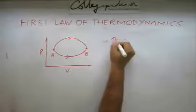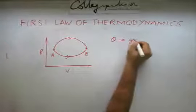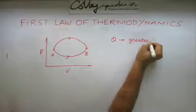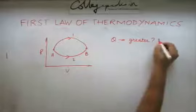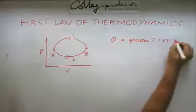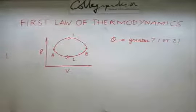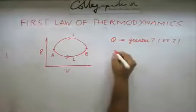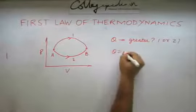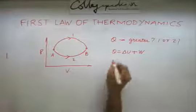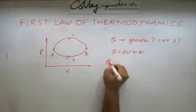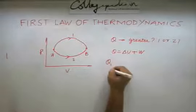You have to tell me this quantity Q is greater in which process? In 1 or 2? To find this out, let us look at the first law of thermodynamics, which says Q is equal to delta U plus W.